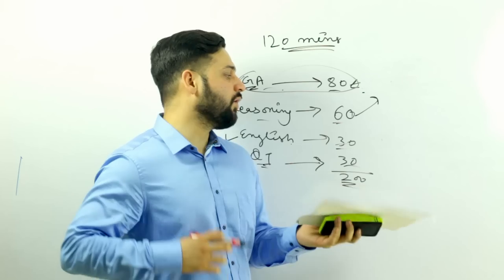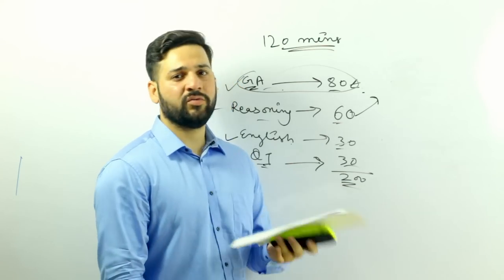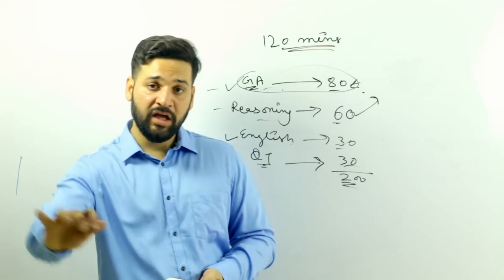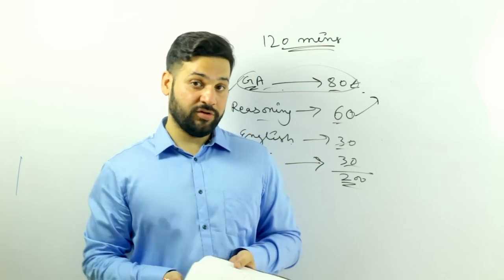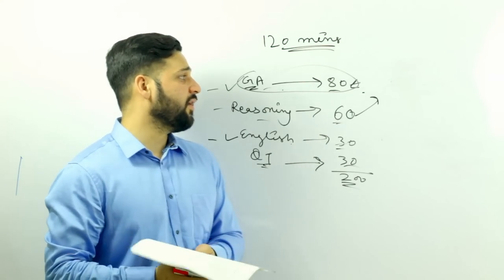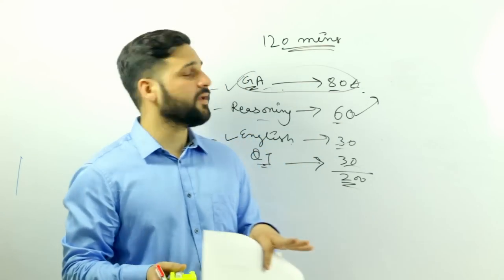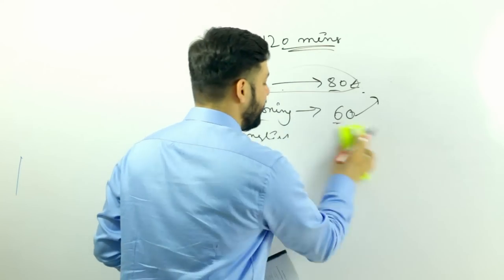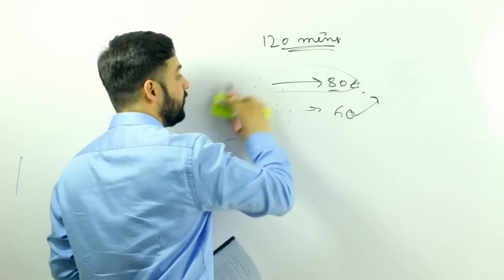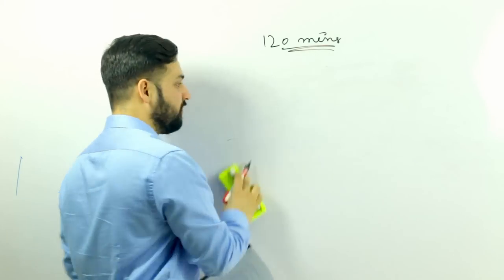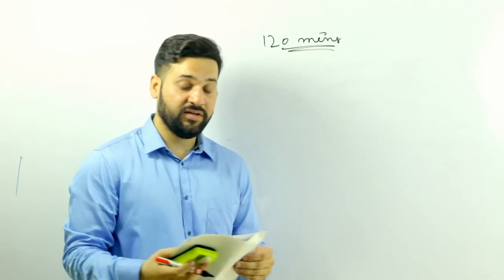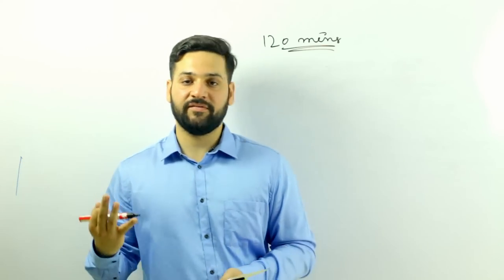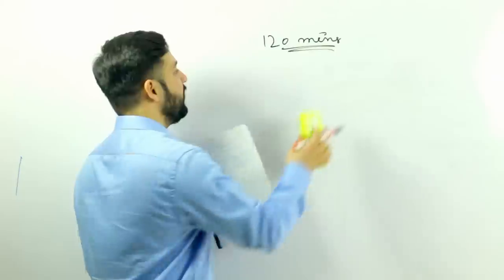I don't think it is so hard to crack, but as so many students appear for this exam, the cutoff remains so high. If you are an MBA, you have an edge in phase two. In the phase one, everybody is at the same position. There is GA, reasoning, English, QT - everybody is at the same level. Nobody is getting an extra advantage over another. The phase two is somewhat different from phase one. There are three papers in phase two.